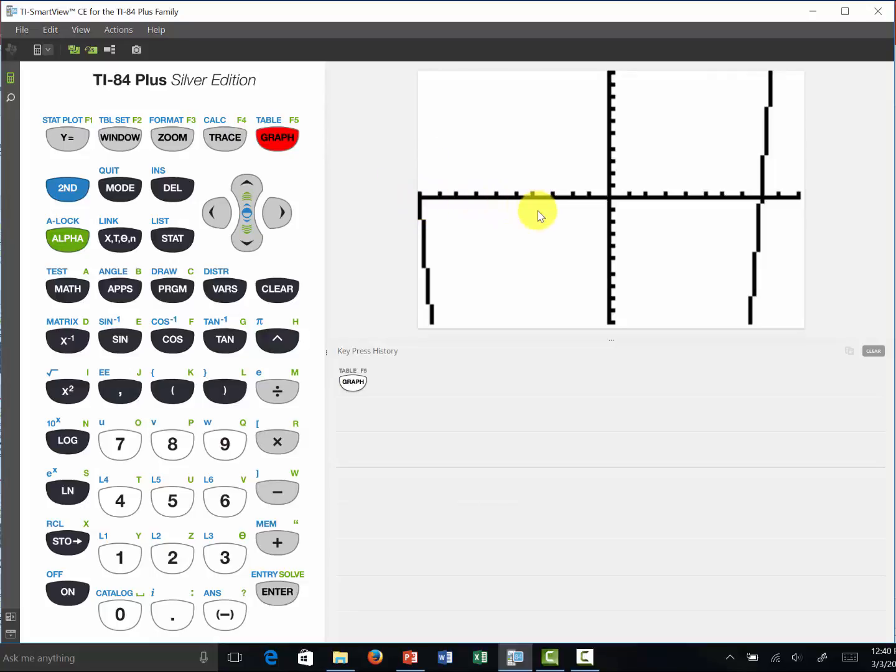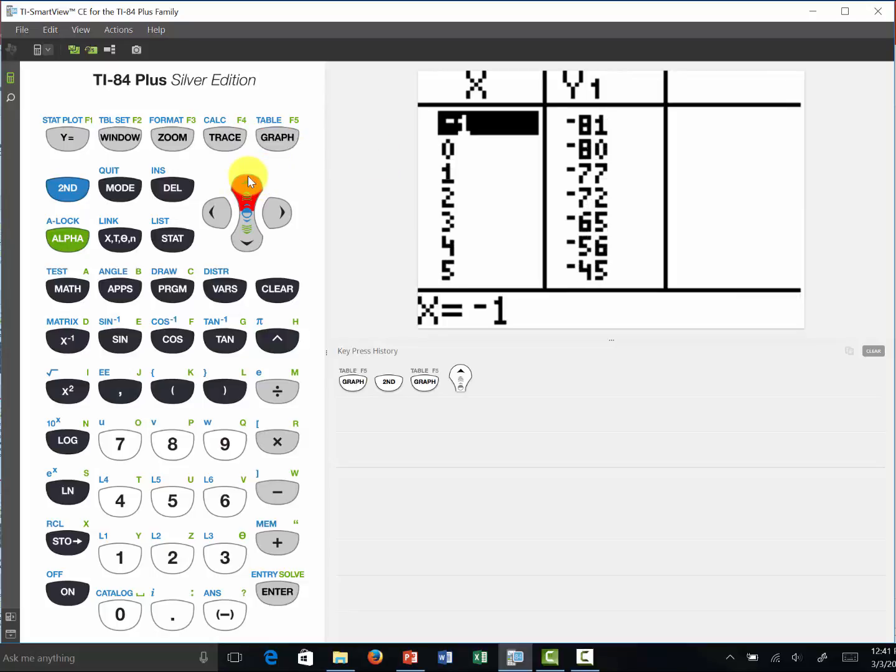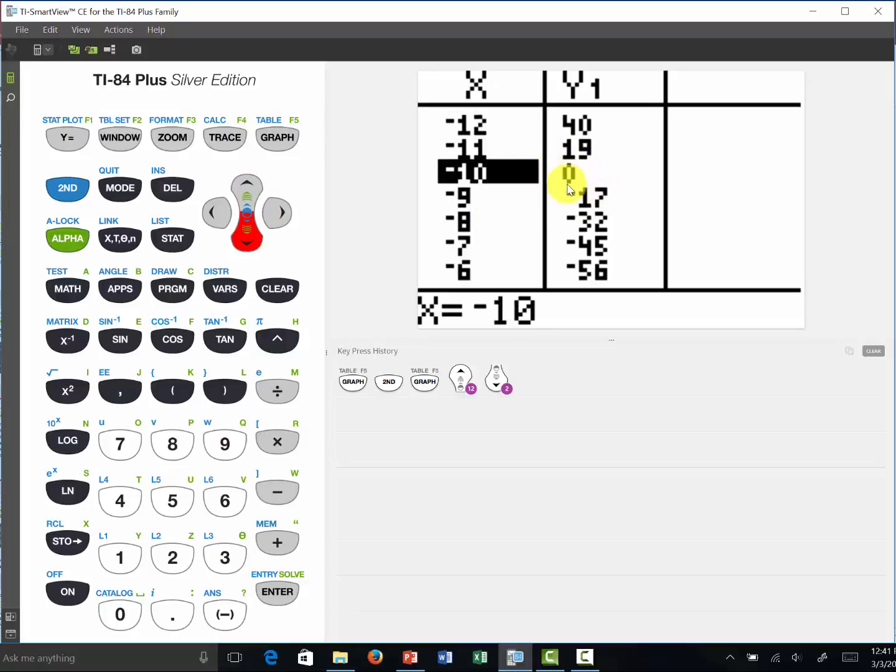Let's use our table command. Okay, let's back up to see where y1 is 0. At negative 10, we do have an x-intercept where y is 0. Now in the terms of the problem, we can't have a negative length.